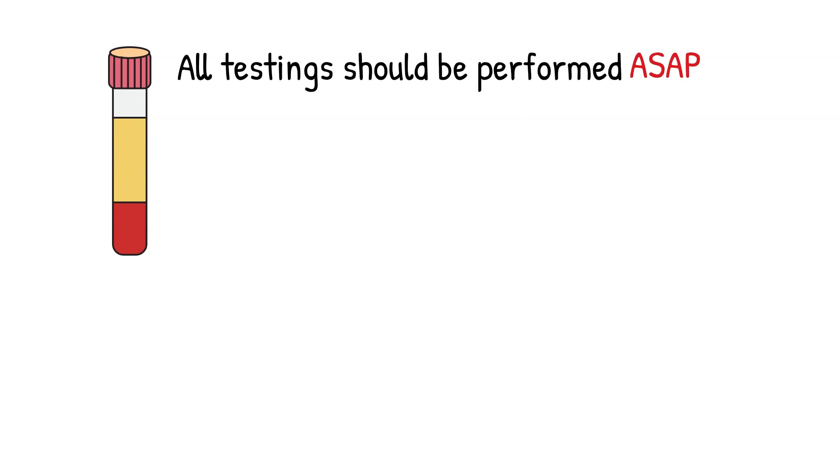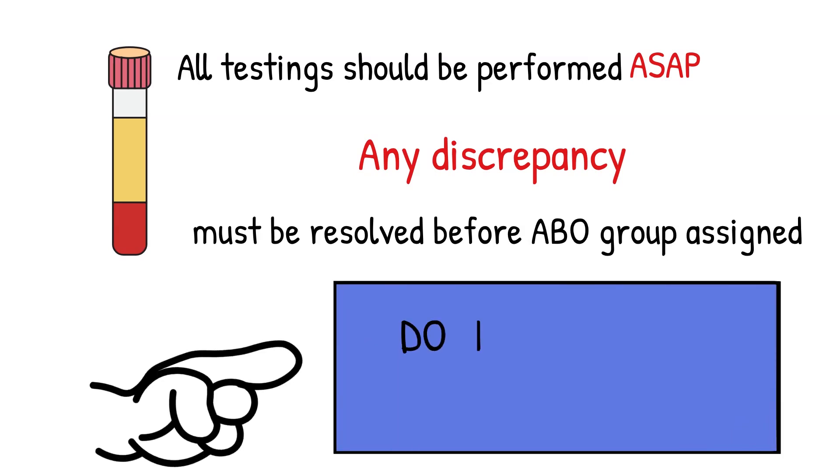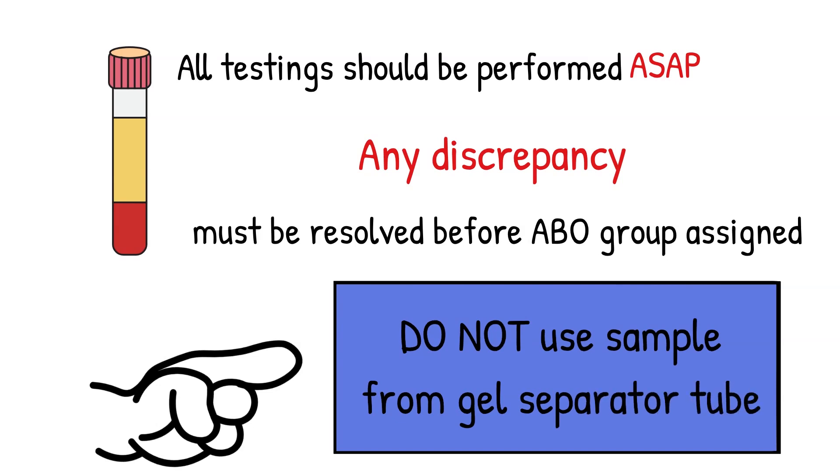All testing should be performed as soon as possible following collections to minimize the chance of false positive or false negative reactions that will occur due to improper storage or contamination of the specimen. Any discrepancy that occurs should be resolved before ABO blood group assigned. Side note, do not use samples drawn into the gel separator tube because the gel will interfere with the testing and could give you false results.